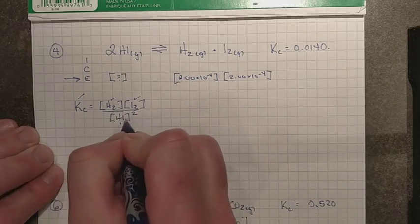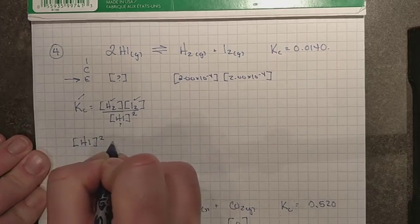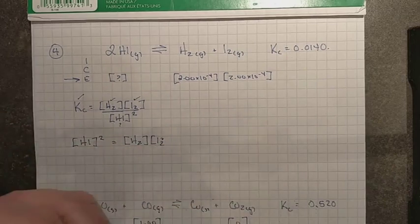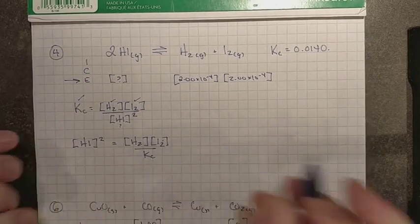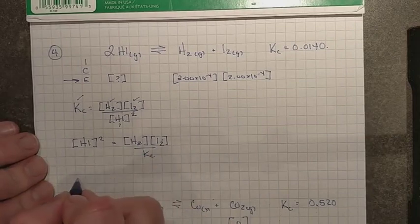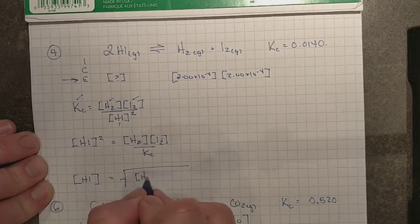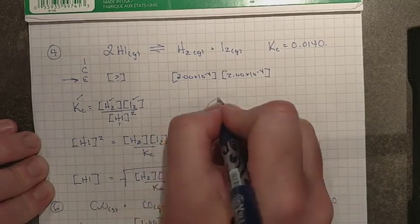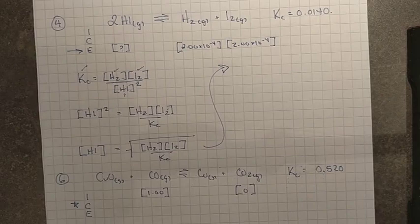Multiply both sides by concentration of hydrogen iodide squared, divide both sides by Kc, and you get this, in which you know all of these things. If you want to just solve for the concentration of hydrogen iodide, then take the square root of all of this.